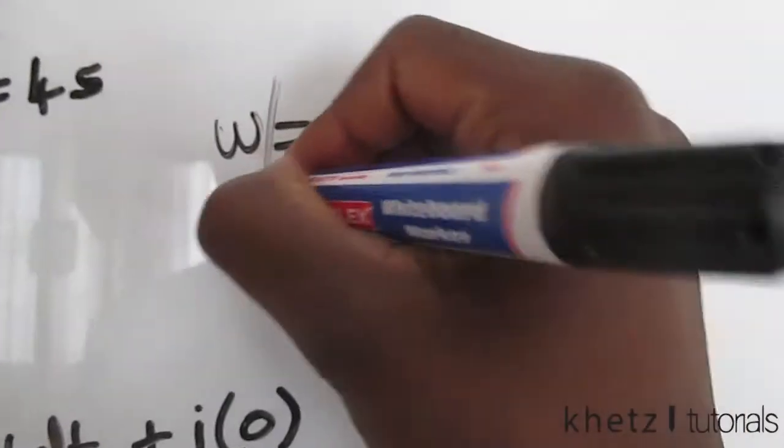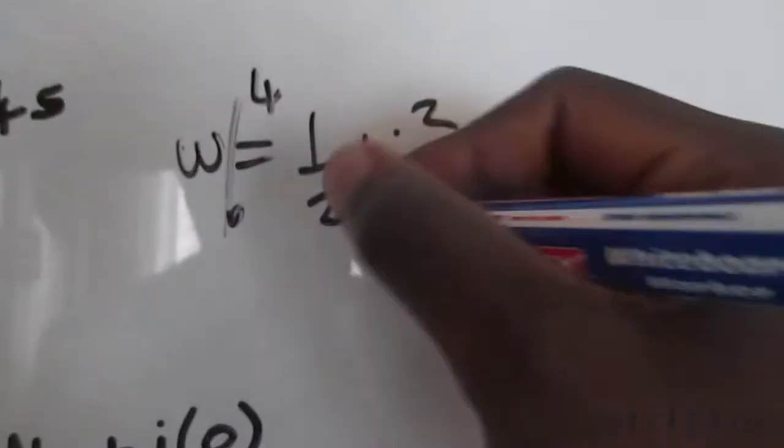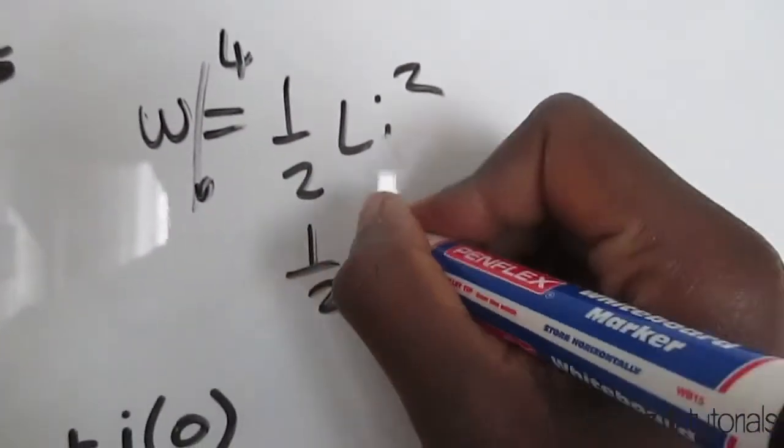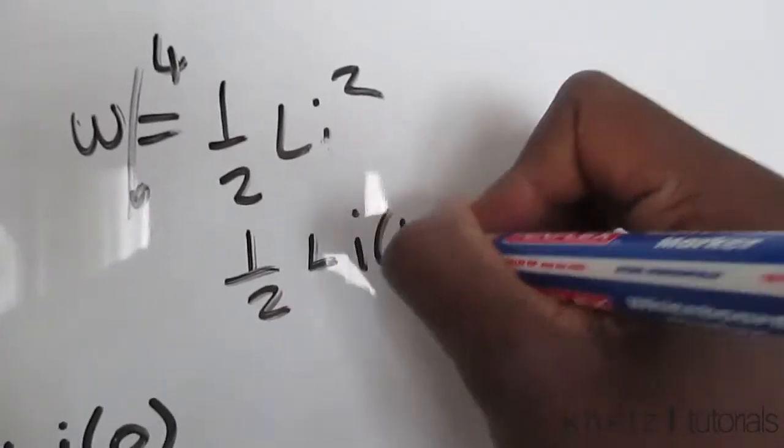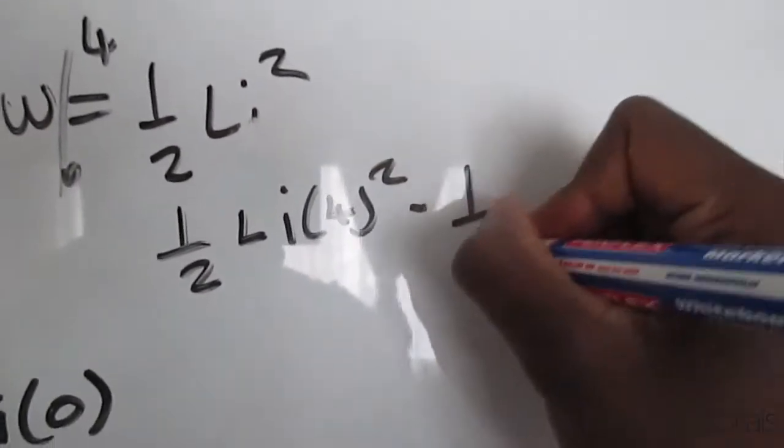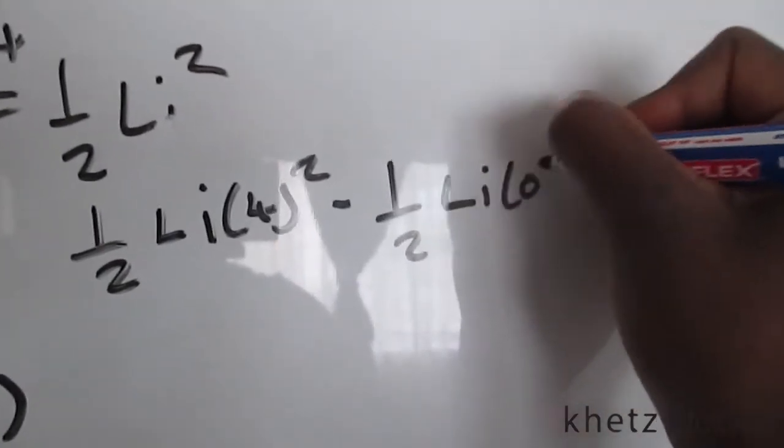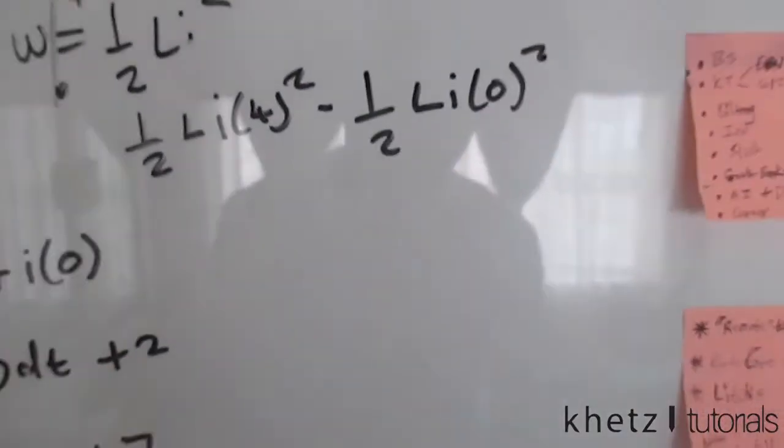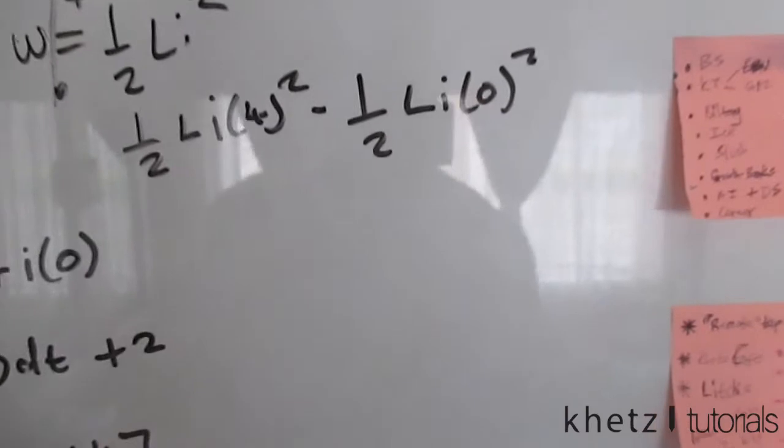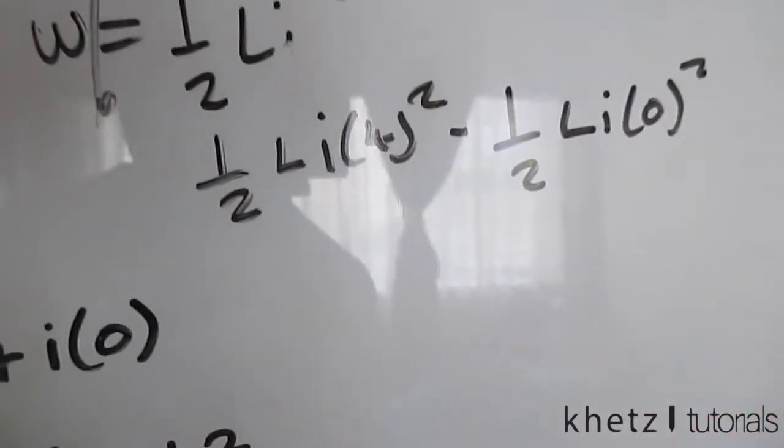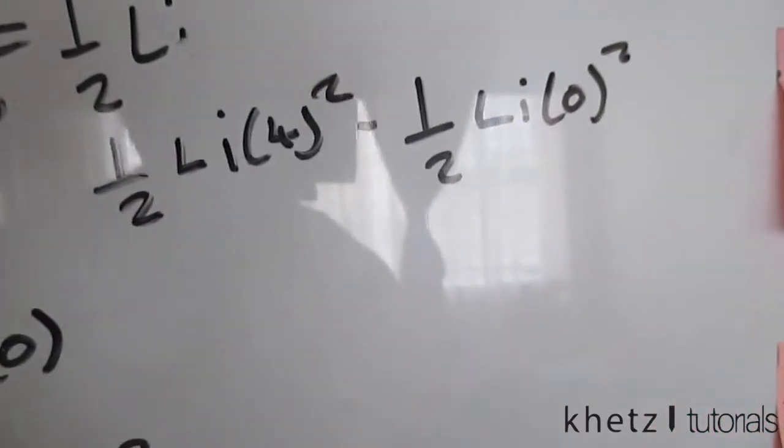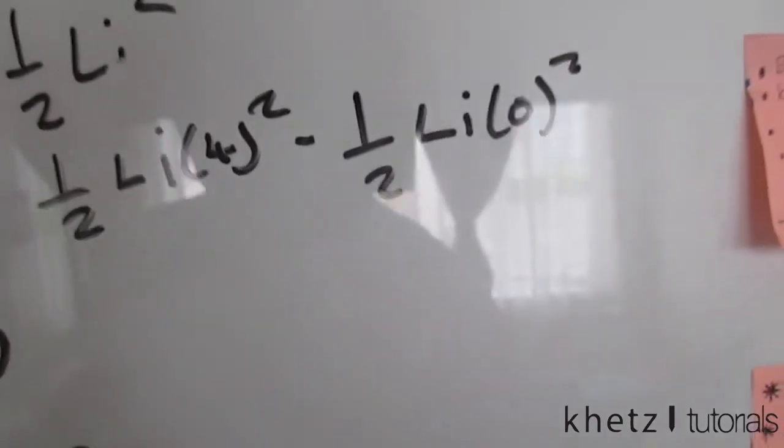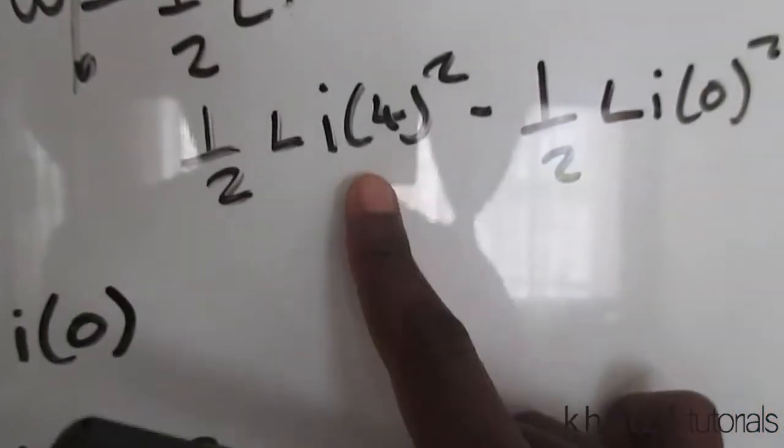Now that we are interested in two points and we're actually given the initial condition, we should consider from 0 to 4, which means this is what we're going to do: half L i at time 4 squared minus half L i at time 0 squared. So this is how we approach this particular problem.